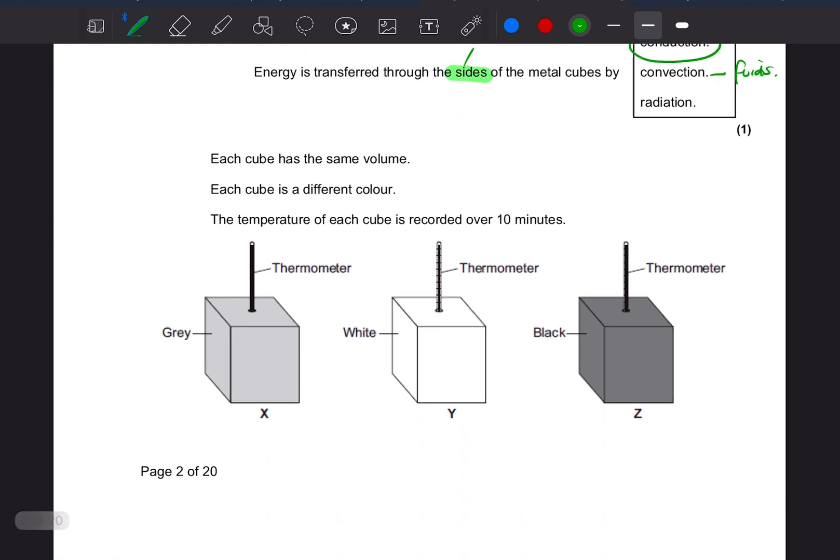So each cube has the same volume. Each cube is a different color. If it's the same, that's a control variable. There are things that you must keep the same in order to maintain a fair test, one where we're going to have results that we can compare. Each cube is a different color, so that's going to be our independent variable. That's the one that we change so that we can see how that affects the results.